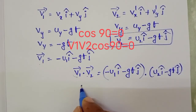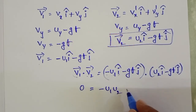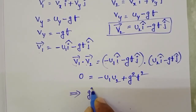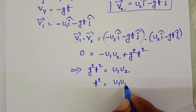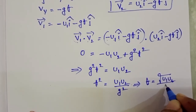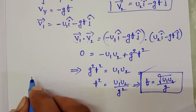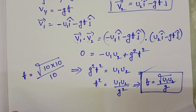The dot product V1 · V2 = 0 gives: (−U1 î − gt ĵ) · (U2 î − gt ĵ) = 0. Expanding: −U1·U2 + g²t² = 0, since î·î = 1 and ĵ·ĵ = 1. Therefore g²t² = U1·U2, which gives t² = U1·U2 / g², and so t = √(U1·U2) / g. This is the formula for the time after which the two velocity vectors are perpendicular. Here U1 = U2 = 10 m/s and g = 10 m/s².